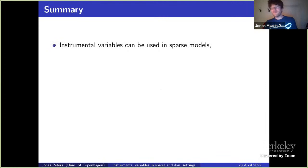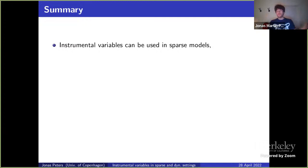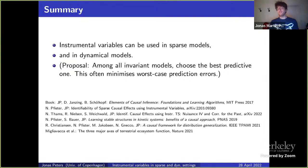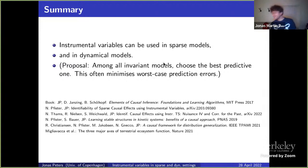To summarize: I talked about instrumental variables in sparse models, where identifiability conditions can be computed and verified; IV in dynamical models; and the proposal that in the under-identified case, among all invariant models, one should choose the most predictive one, which often minimizes worst-case prediction error under worst-case intervention on the instruments.